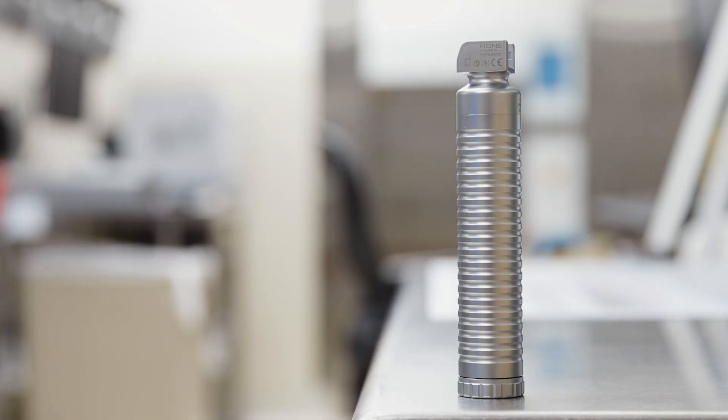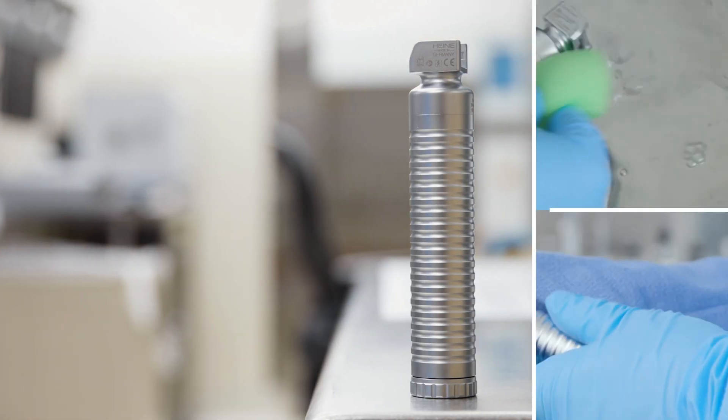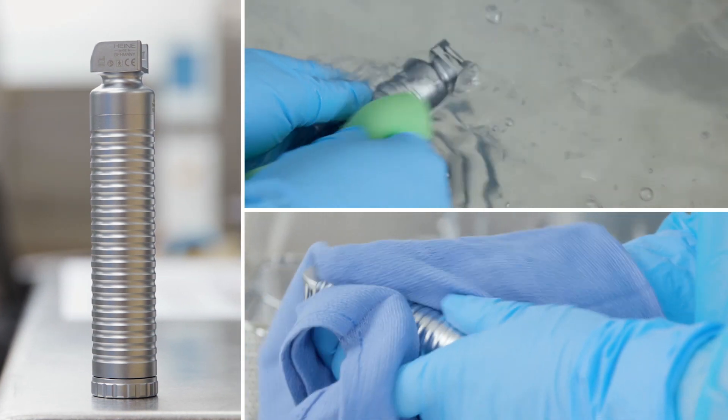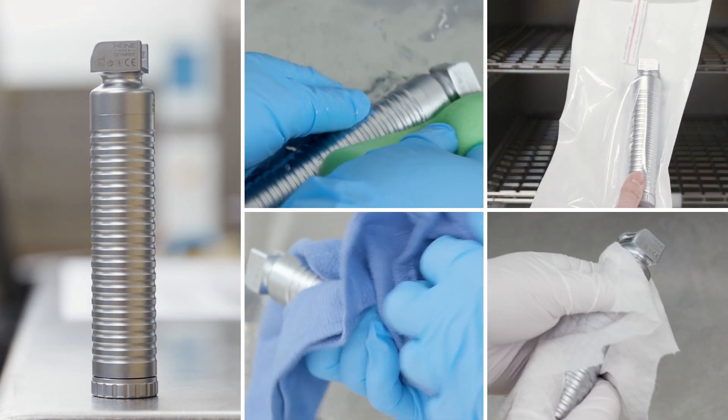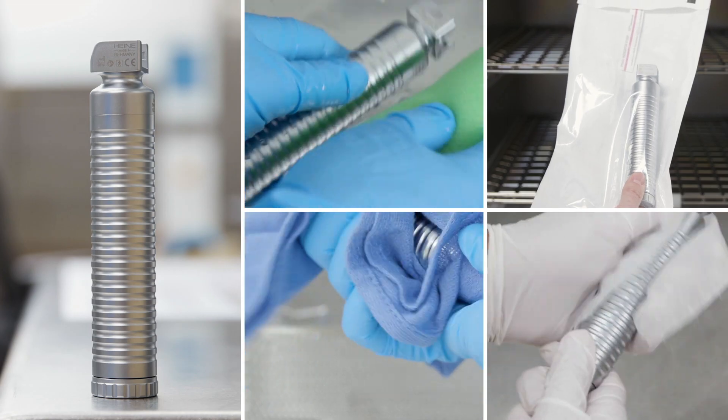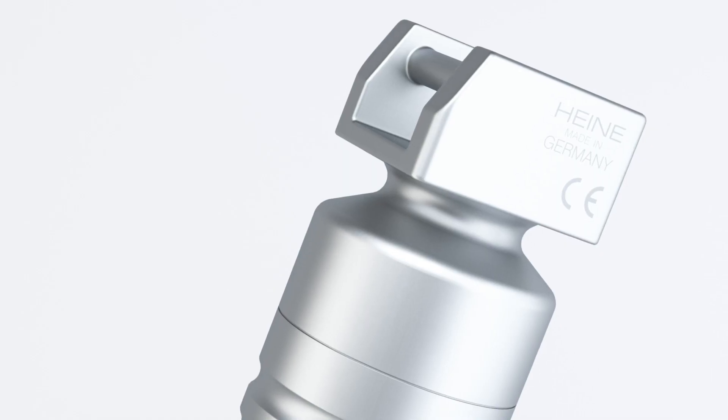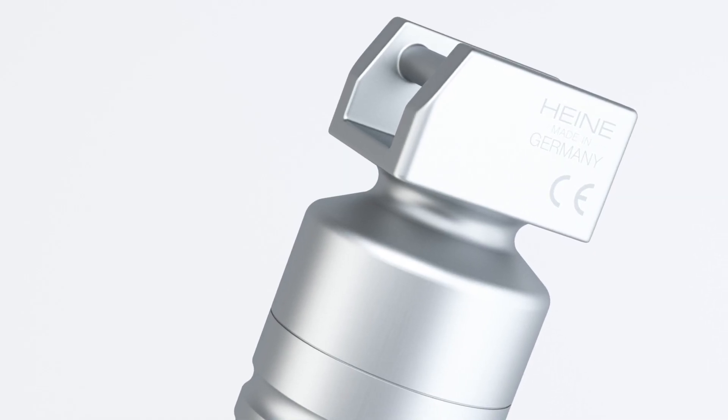By working with sterile processing department managers, Hyna has developed a hygienic reprocessing document for the EasyClean that provides facilities with five detailed, step-by-step options for reprocessing the handle. This provides a level of flexibility and safety not offered by any other manufacturer.